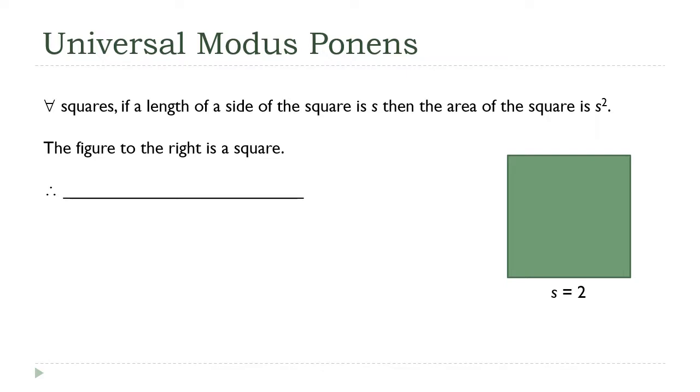The first premise gives us a general statement about squares and their areas, where the second premise identifies the figure to the right as being a square. That is, it's a specific instance of the category of shapes discussed in the antecedent of the first premise.